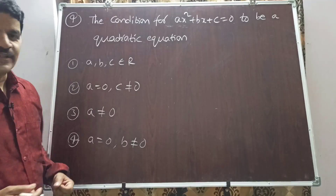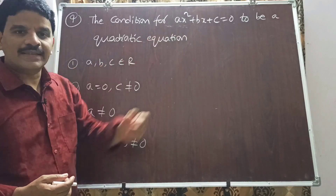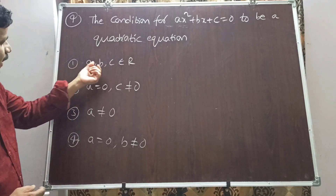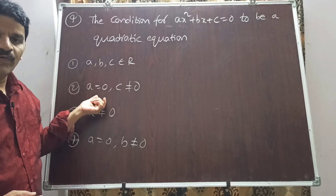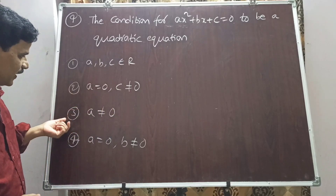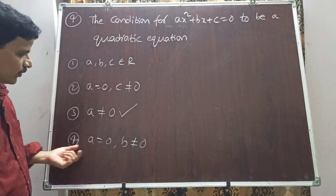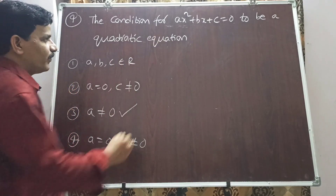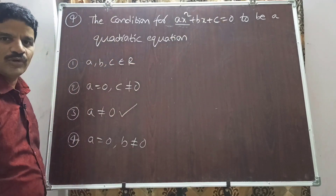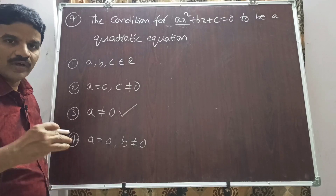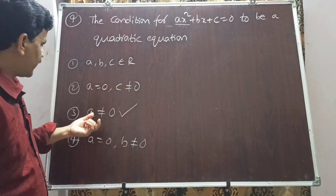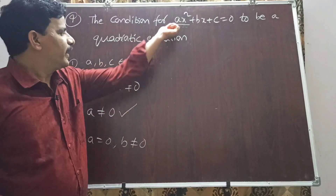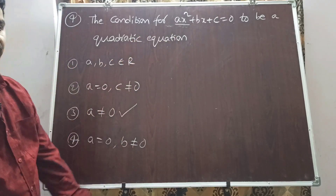Question 4: The condition for ax² + bx + c = 0 to be a quadratic equation — the right answer is option 3: a ≠ 0. If a = 0, the equation becomes bx + c = 0, which is a linear equation, not quadratic. A quadratic equation is a second-degree equation, so a ≠ 0 is required.